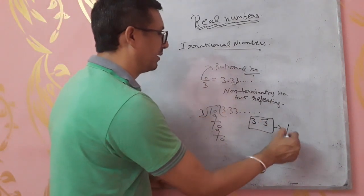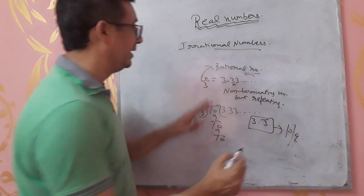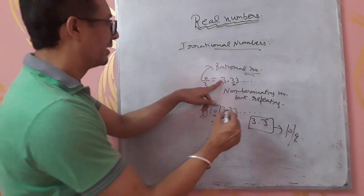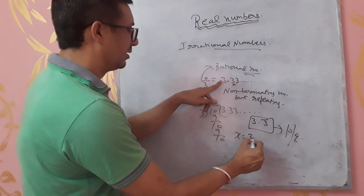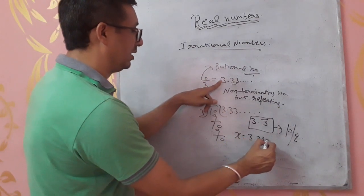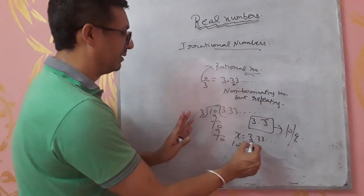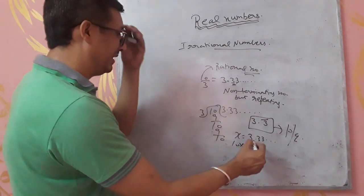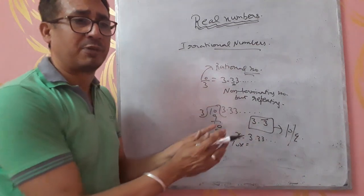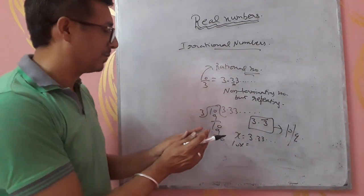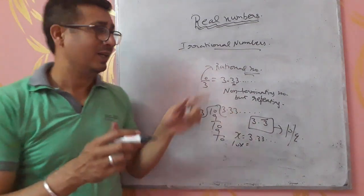We can link this back to P by Q form. The number 3.333... which is 3.3 bar — we multiply by 10, then subtract, and the repeating decimal becomes a ratio, confirming it is a rational number.